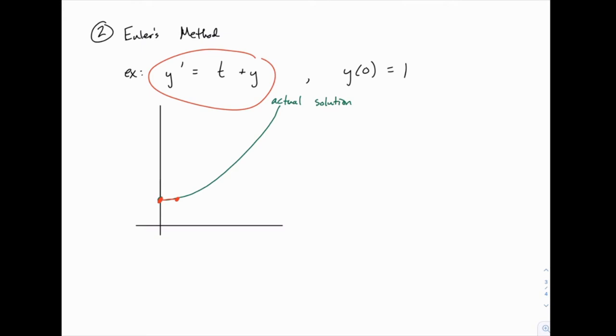And then we just repeat the process. Because at this new point, we can again calculate the slope that the solution would be traveling. Now we know the actual solution doesn't exactly pass through this point, but it gets pretty close. And so we know that when we apply this point to the differential equation, the slope we get won't be exactly right, but it'll be close enough that our approximate solution should track with the actual solution more or less. So we would do something like move off in this direction, and then stop again. And then recalculate, and at each step we recalculate the slope based on the point we're at.